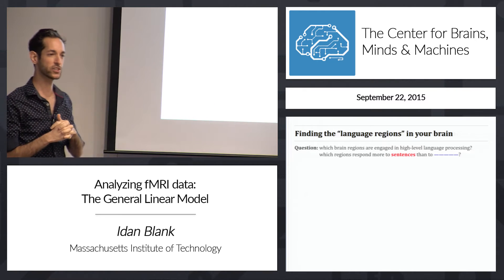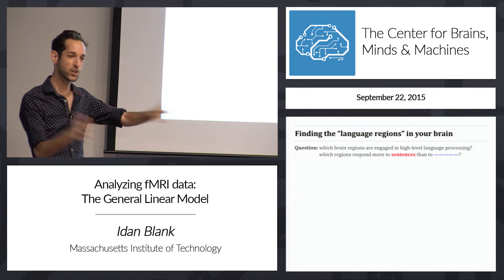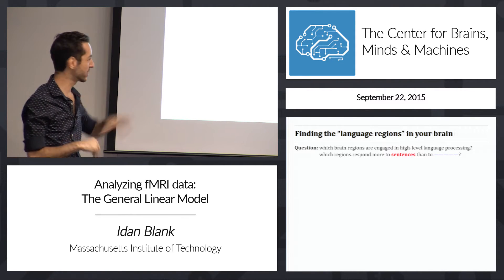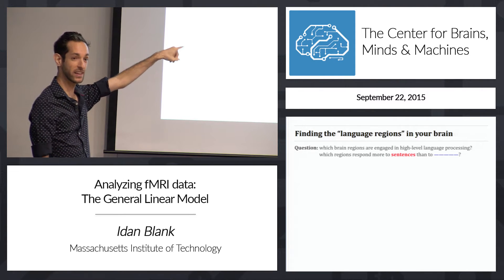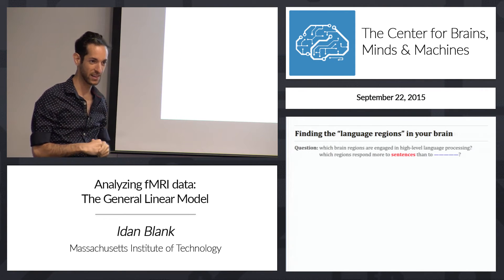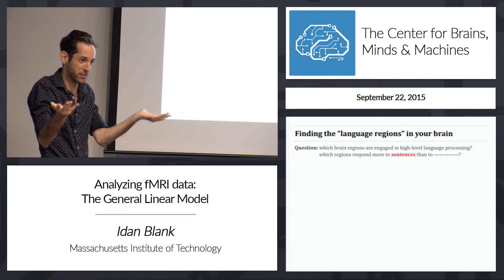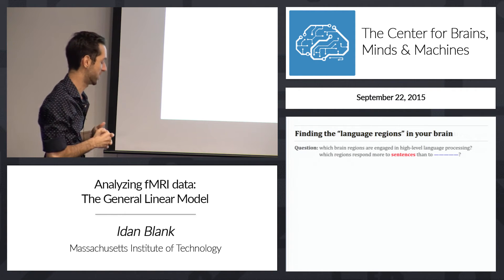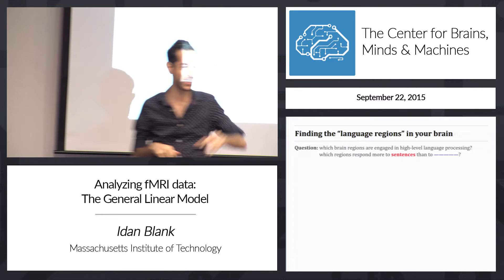We need to find a control condition and ask what regions increase their response to sentences more than to some other control condition. This control condition will hopefully wash out all the regions we're not really interested in. Regions we don't care about should activate equally for both conditions, so when we compare them, those regions show no differentiation and we won't find them. What will our control condition be?